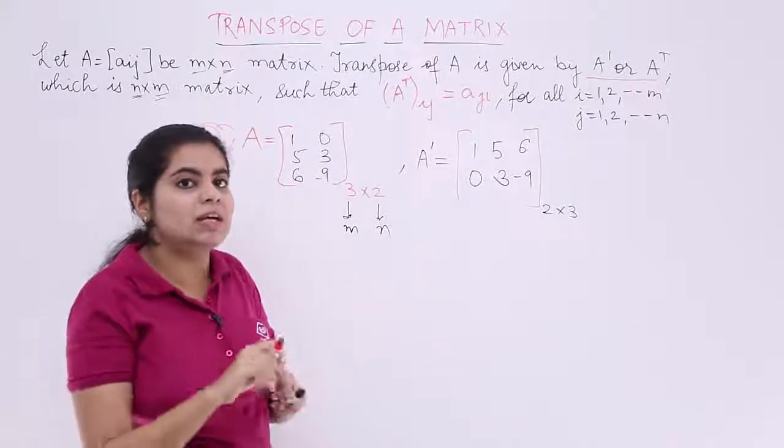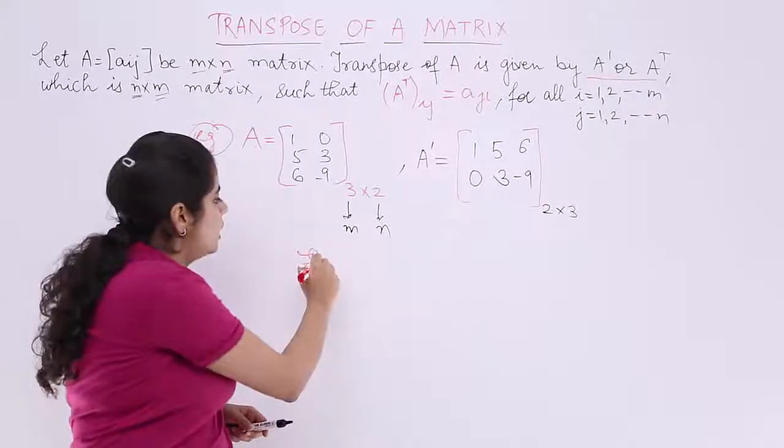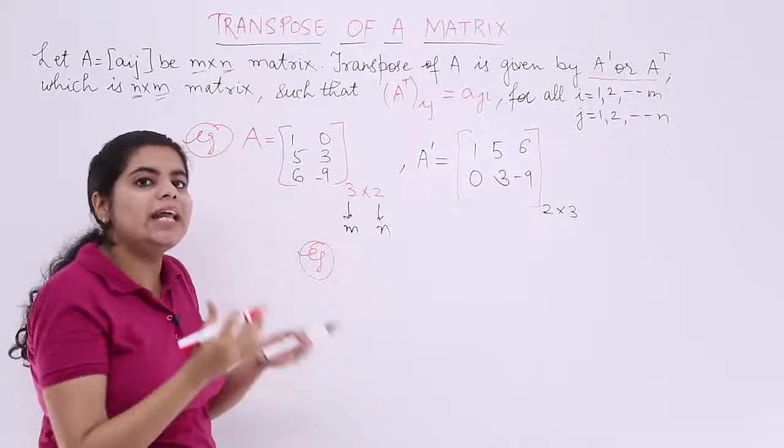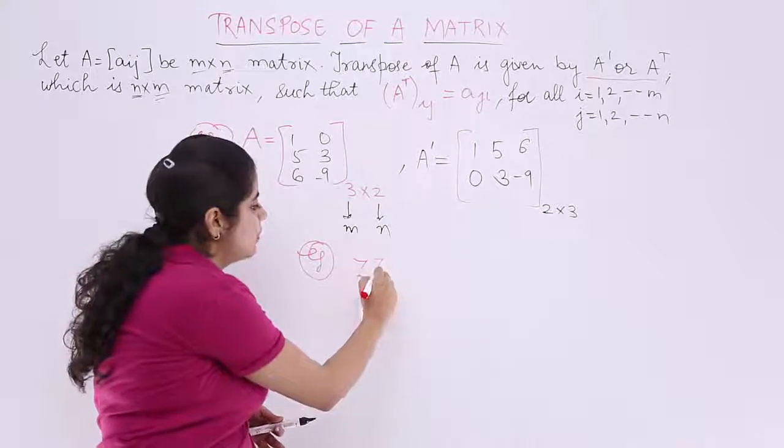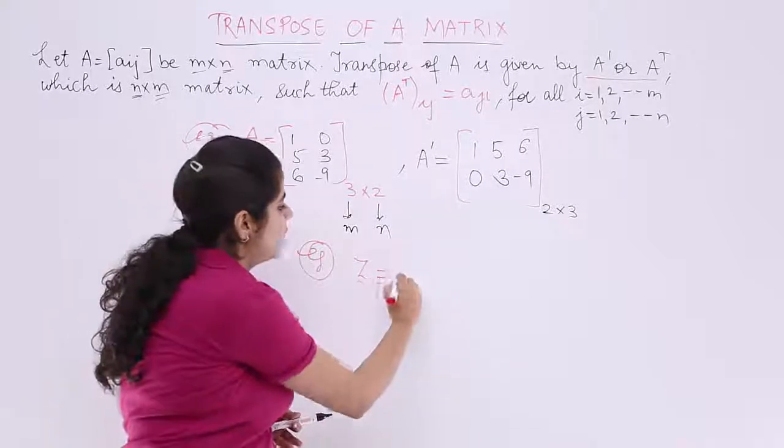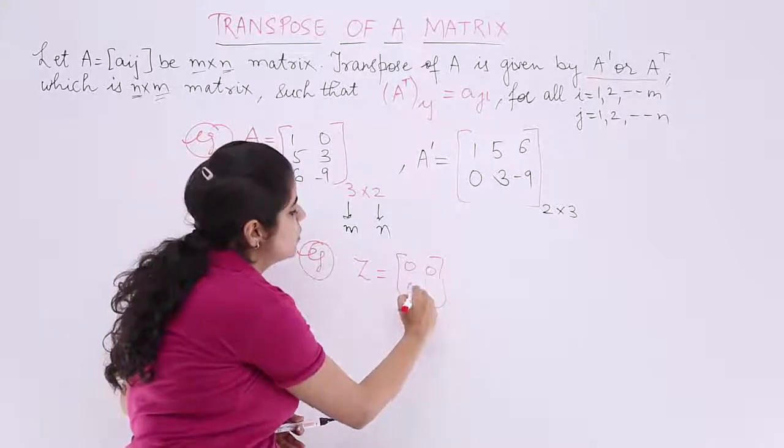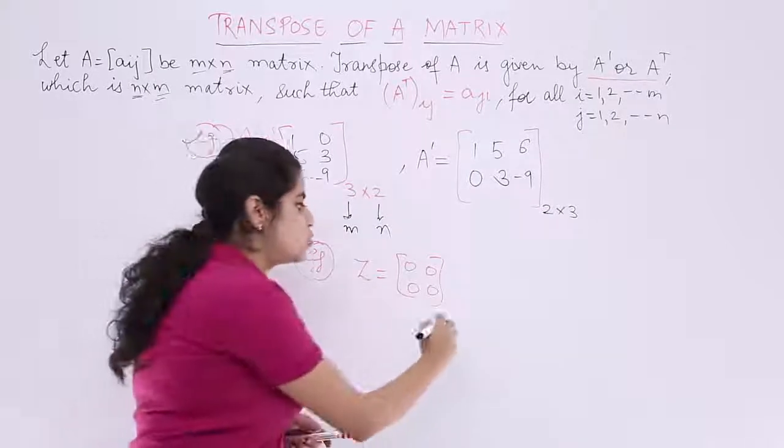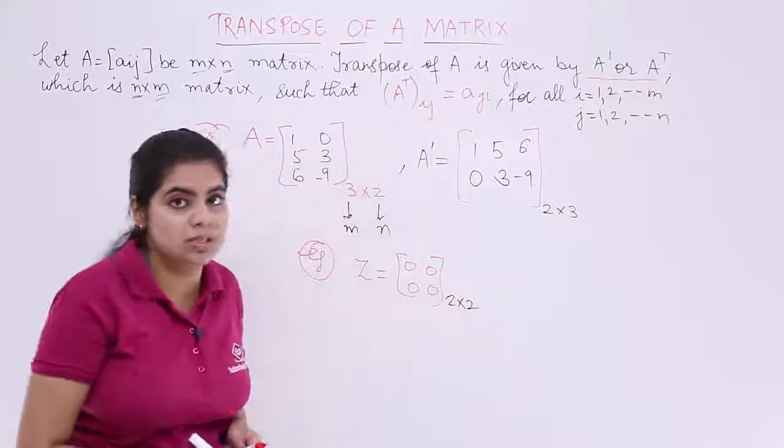Similarly, another numerical illustration: let's see a null matrix or any other matrix for that sort. The matrix is given by Z and that matrix is given to me as 0, 0, 0, 0. Now you know this is a 2 by 2 matrix which is a null matrix. Everybody knows this.